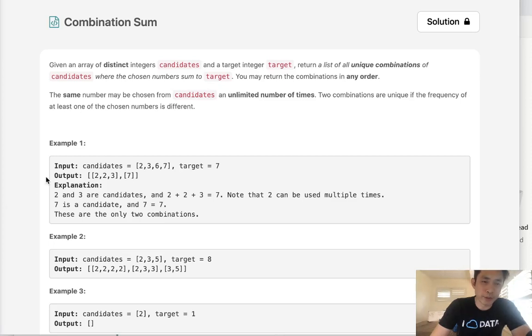Welcome to October's legal challenge. Today's problem is combination sum. Given an array of distinct integers and a target integer, return a list of all unique combinations where the chosen numbers sum to target. You may return the combinations in any order.